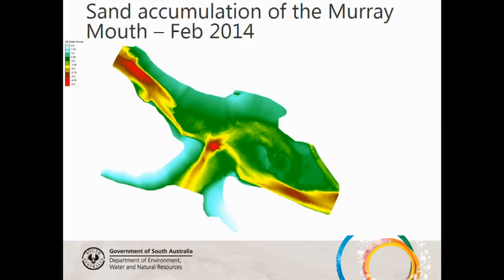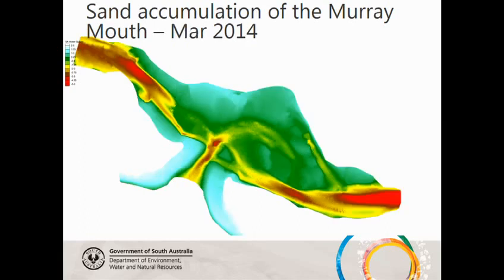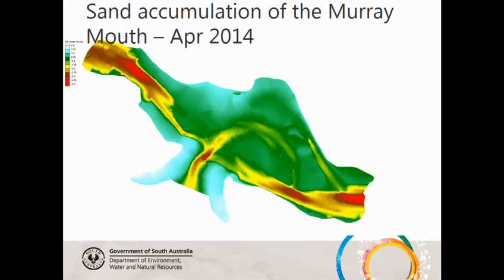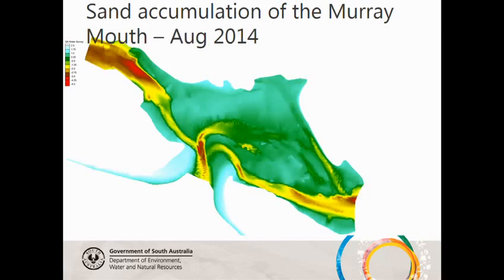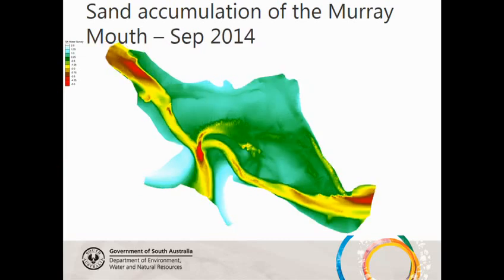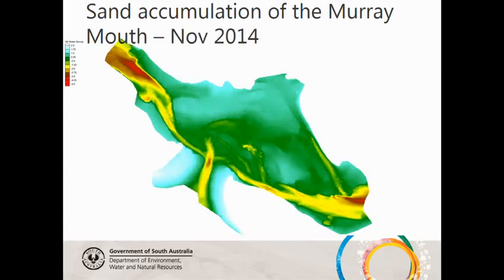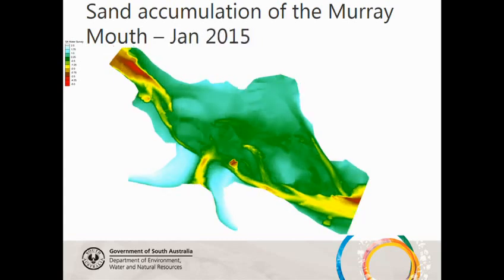This is a snapshot of the bathymetry data taken by SA Water over a six-week period through 2014. You can see the sediment accumulating. During this period, flow was about 1,000 to 2,000 megalitres per day out of the barrages. The exception was August, when there was a period averaging 10,000 megalitres per day, and this shows that there was some sediment removal from the Murray Mouth. However, flow conditions continued to deteriorate, and then in January 2015 dredging recommenced.